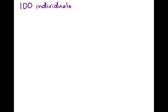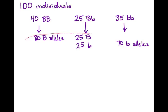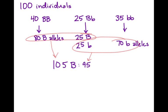In a population of 100, if 40% are homozygous dominant, that's 80 dominant B alleles, because each individual has two of them. If 25% are heterozygous, that's 25 more dominant B and 25 recessive B alleles. That leaves 35% — 35 individuals — that are homozygous recessive, giving another 70 recessive alleles. Adding this up: 105 dominant B alleles and 95 recessive B alleles, which reduces down to a ratio of 21 to 19 — that's your allele frequency.